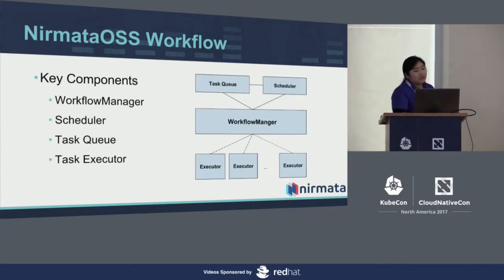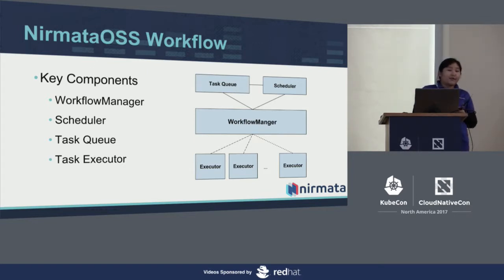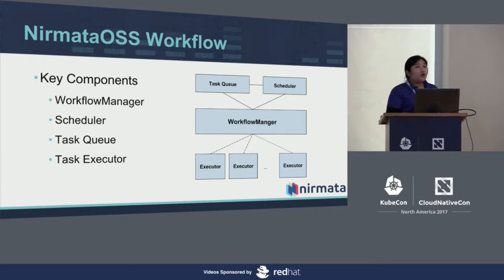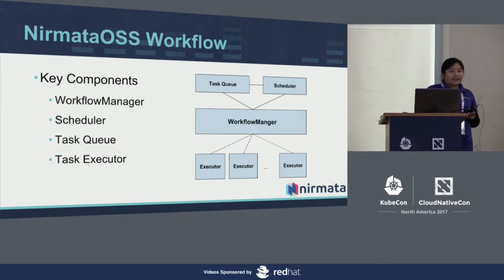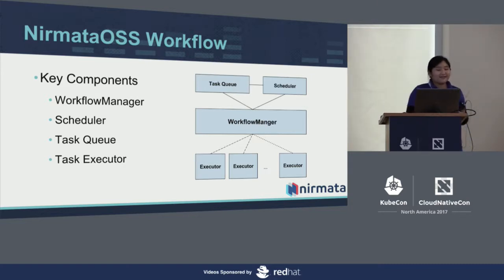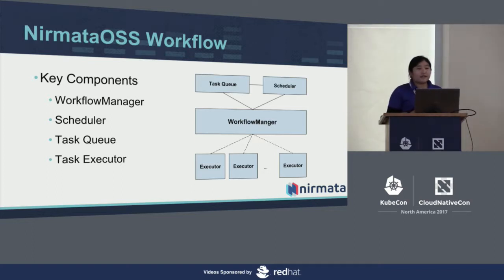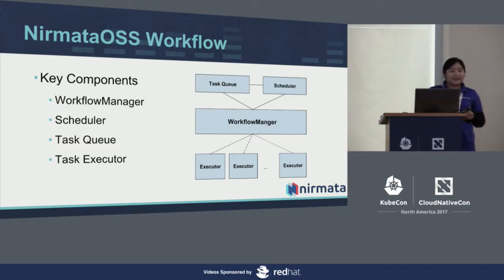There are some key components in the workflow library. First is the workflow manager, which registers for a specific task type when the service is initialized. The workflow manager is responsible for submitting your task and giving notification when there's a new task node. The scheduler manages the task node during execution and ensures that a task node will not be executed twice — because it's a distributed system. The task queue is a wrapper of a Zookeeper node where we put our task nodes in.